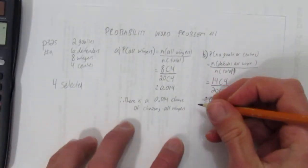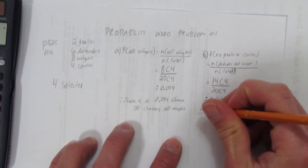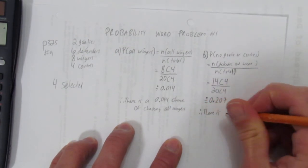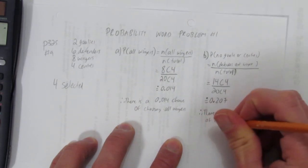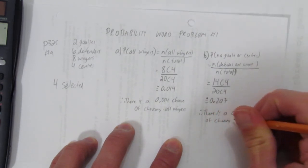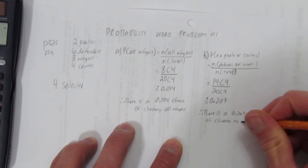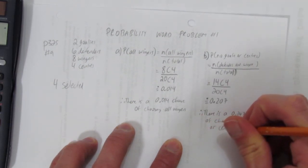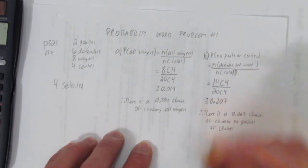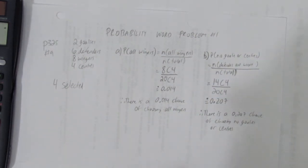So, a little more likely. We need a therefore statement. There is a 0.207 chance of choosing no goalies or centers. And so those are a couple of parts to a word problem of how to use probability.